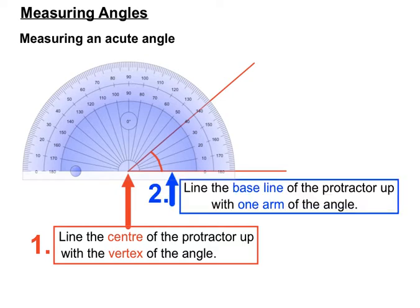Step two is to make sure our baseline of the protractor that goes across the bottom there is lined up as precisely as we can make it with one of the arms of the angle.